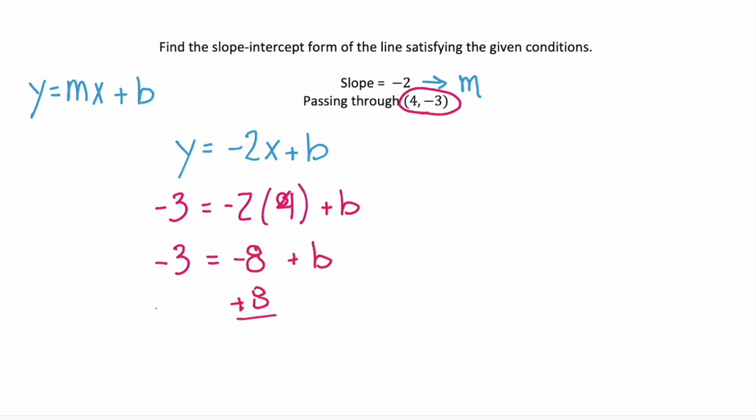We'll add 8 to both sides so we can get b by itself and we see that b is equal to 5. So the equation for our line is y equals negative 2x plus 5.